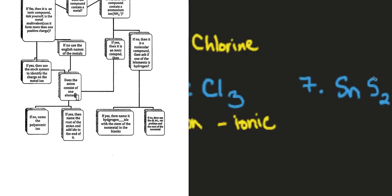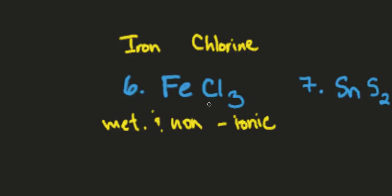So the way we do that is we look at chlorine. We know that iron is either going to be a two or a three. It's a plus two or plus three. Chlorine which is a halogen has a negative one.